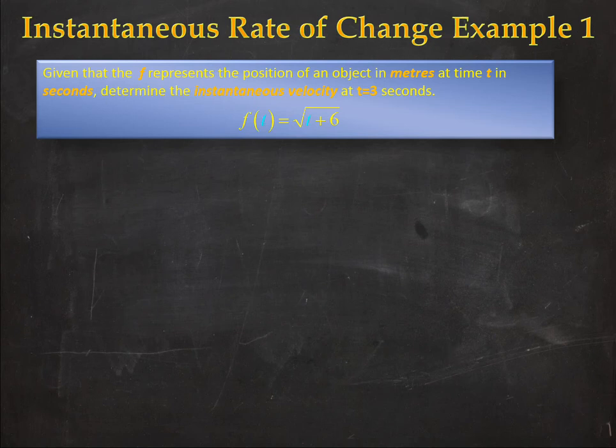So in this question we have a function f(t) which is equal to the square root of t plus 6 and what we're interested in is determining the instantaneous velocity specifically when t equals 3.